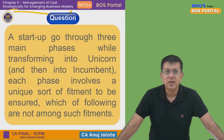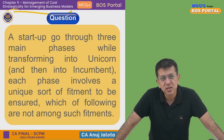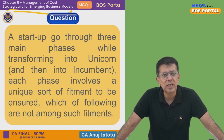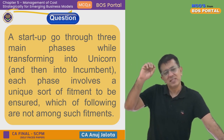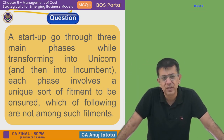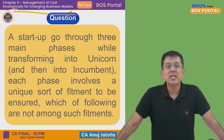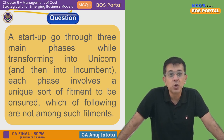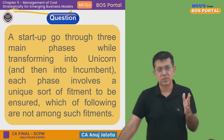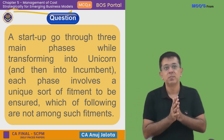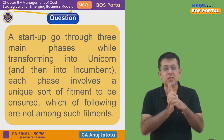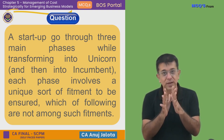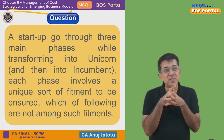Let's start — it's going to be interesting. Today's question: a startup goes through three main phases while transforming into a unicorn. What do we mean by unicorn? And then into an incumbent. Incumbent means an established company. A unicorn is a phase you might have heard of — a company whose valuation has touched one billion dollars. That is what is meant by the term unicorn.